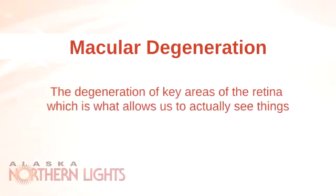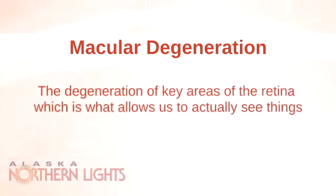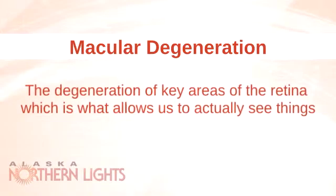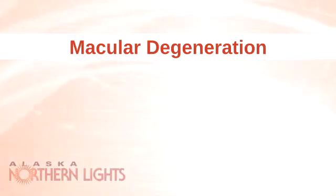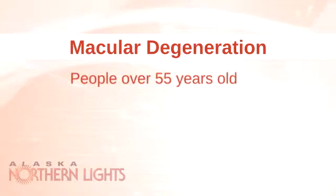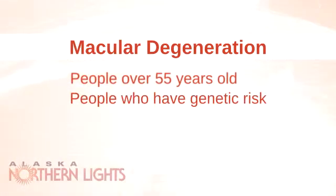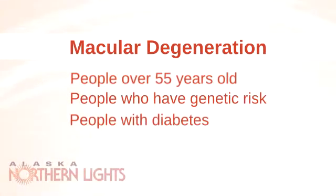Macular degeneration is the degeneration of key areas of the retina, which is what allows us to actually see things. The people most at risk for macular degeneration can include people over 55 years old, people who have genetic risk, or people with diabetes.